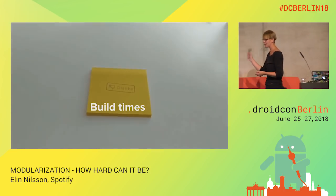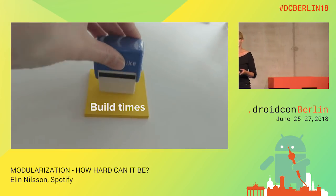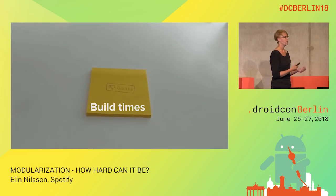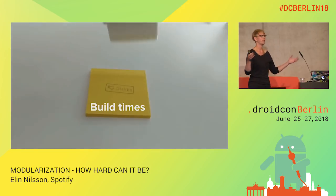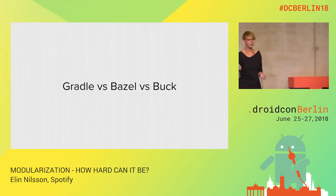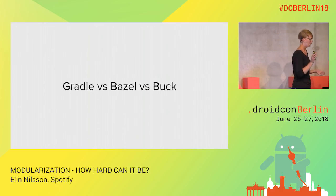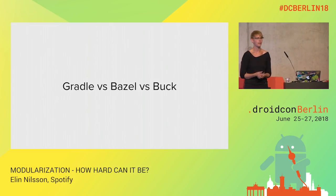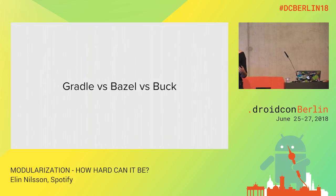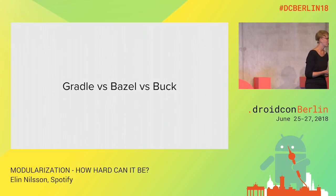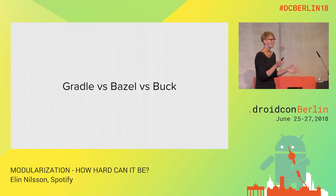On build times: smaller modules are faster to build and compile incrementally, but the bottleneck will always be the size of your main app module. Bazel (Google) and Buck (Facebook) are much better at handling builds with a modularized codebase, given you don't have big modules. A colleague tried out Buck with OKBuck at Spotify — module build times became 2-3 seconds, but the main app was still 15 minutes. So we have a ways to go.